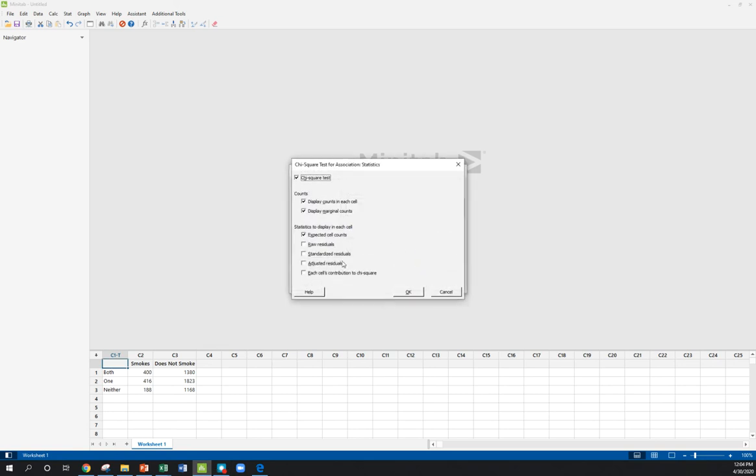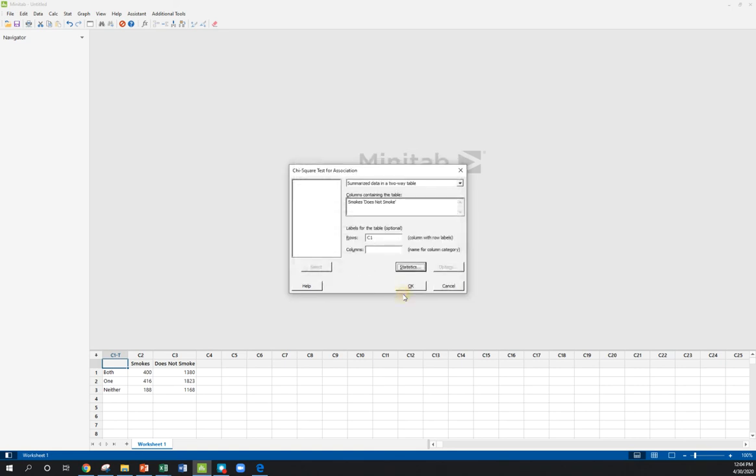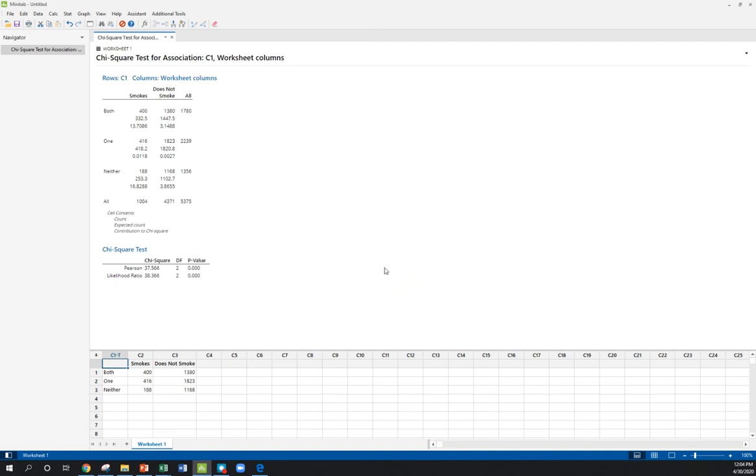So click OK here, and it gives us all the information we need. It should match up with what we calculated: our large chi-squared, small p-value, two degrees of freedom, and we have everything nice and labeled.